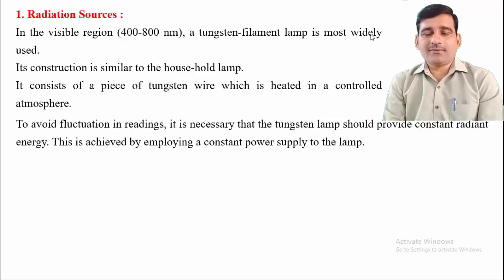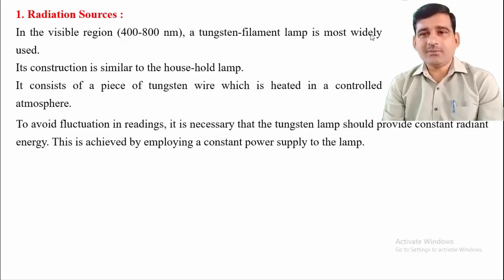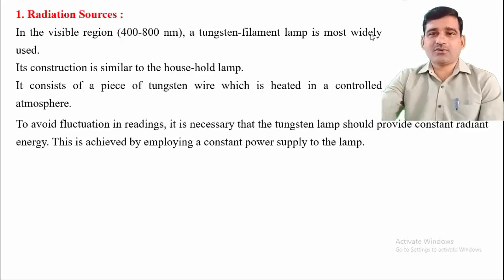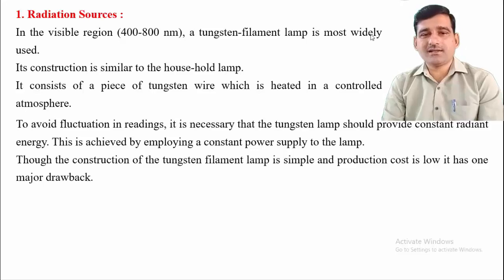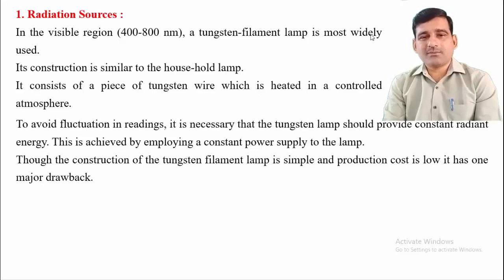To avoid fluctuations in readings, the tungsten lamp must be provided a constant power supply so that it delivers continuous radiation. Although the construction is simple and the production cost is low, this lamp has one major drawback.